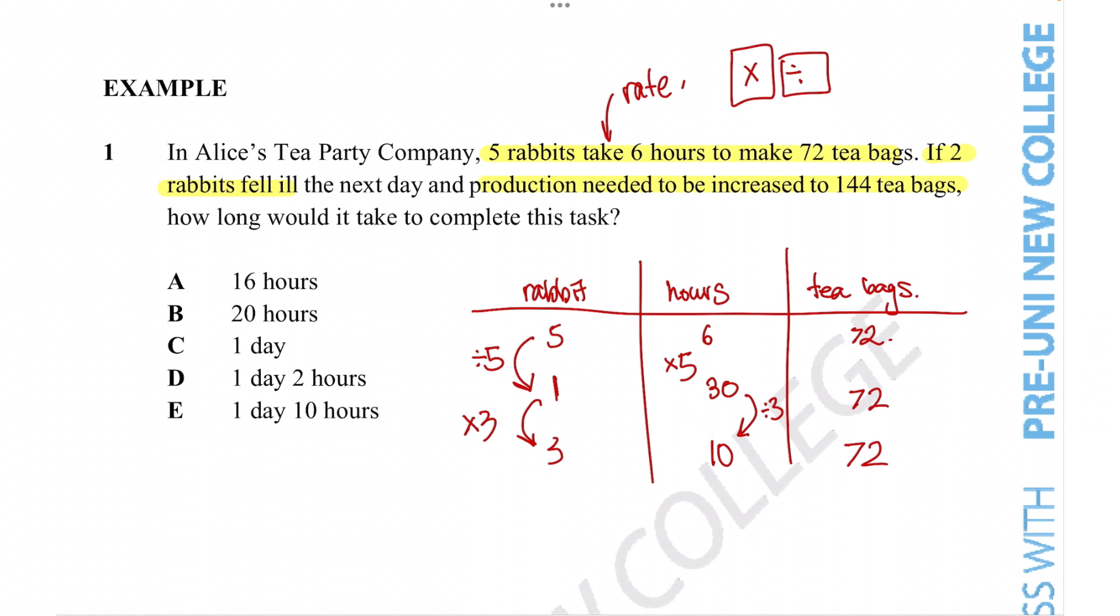But the question isn't done yet. The question actually wants us to figure out how long it would take for three rabbits to complete 144 tea bags. This time, instead of the transformation being applied to the rabbits, it's being applied to the tea bags. Tea bags now are needed to be produced to 144, which is twice the amount of the original tea bags that was needed. The number of rabbits have stayed the same, and the thing that's changing is the hours needed to complete it.